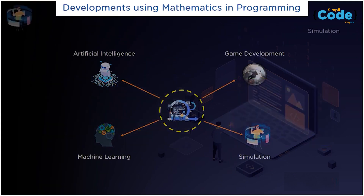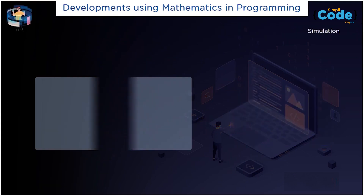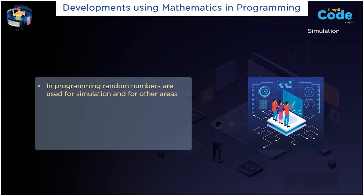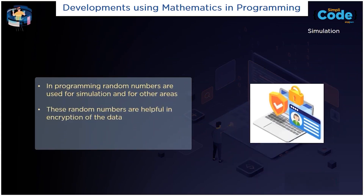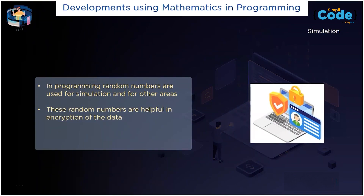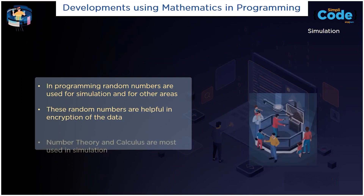The final one in the list is simulation. In programming, random numbers are used for simulation and for other areas. The random numbers in simulation are helpful in the encryption of data. Number theory and calculus are mostly used in simulation.